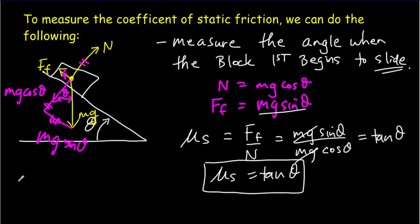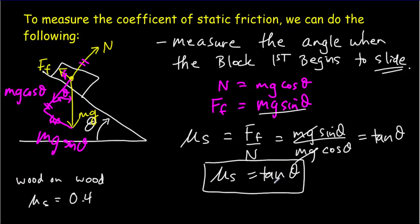For example, for a wooden block on a wooden surface, we expect a coefficient of static friction of about 0.4, meaning the block should first begin to slide at about 22 degrees — because tan(22°) ≈ 0.4.